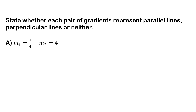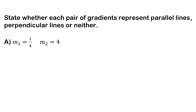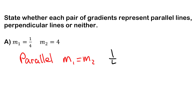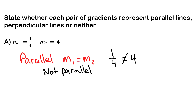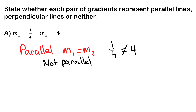Now we're going to do some questions where we state whether each pair of gradients represents parallel, perpendicular, or neither. The first thing I like to check is always parallel lines. For parallel lines, m1 should equal m2. Testing this: does negative one over four equal four? No, so these lines are not parallel.